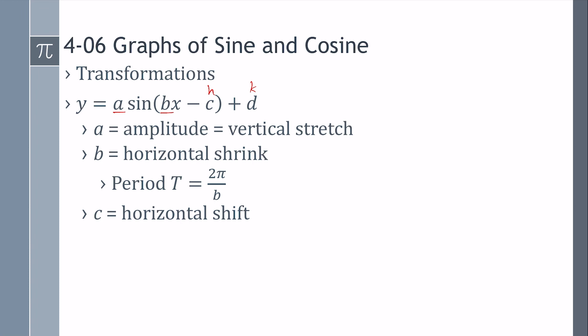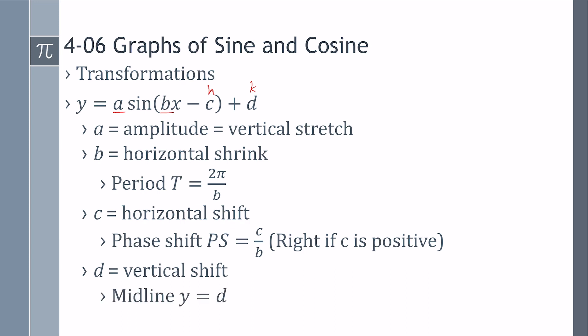C is a horizontal shift, so it's shifting it left to right. We'll call that a phase shift, which is actually C divided by B because of the way the transformations work. And if C is positive, we're going towards the right. And D is a vertical shift, up and down, so the midline, that middle line, will be Y equals D.